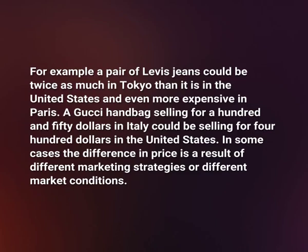Costs are an important factor in calculating and setting prices in the international market. Prices for the same product are sometimes vastly different in different countries. For example, a pair of Levi's jeans could be twice as much in Tokyo than in the United States and even more expensive in Paris. A Gucci handbag selling for $150 in Italy could be selling for $400 in the United States.